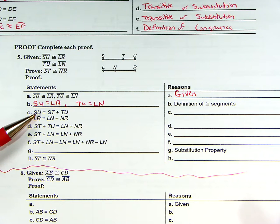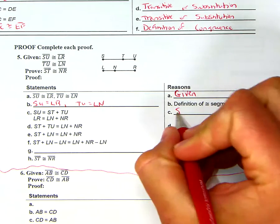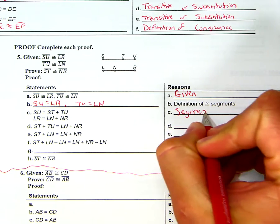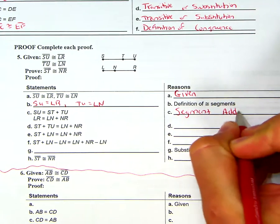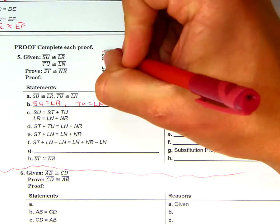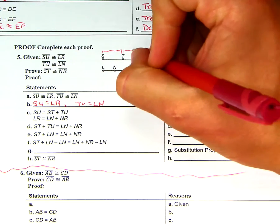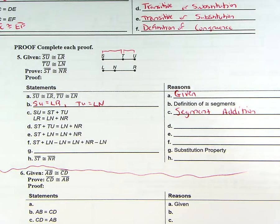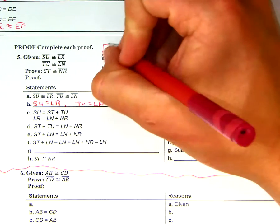Now C, notice it says SU is equal to ST plus TU and LR equals LN plus NR. Now where did they get this from? This is our segment addition postulate. So it's segment addition. The fact that ST plus TU is equal to all of SU.